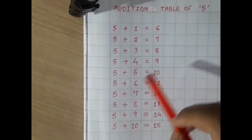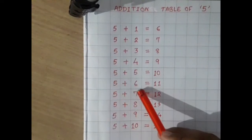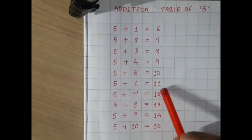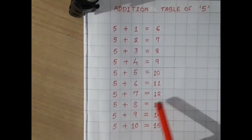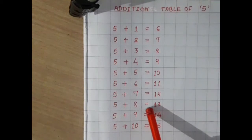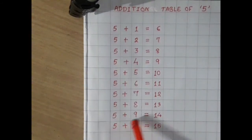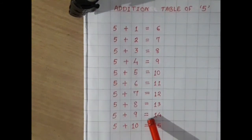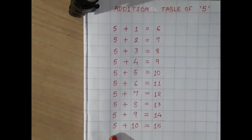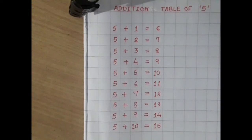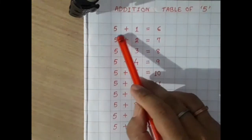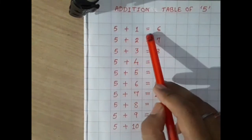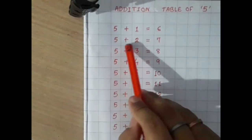Five plus six equals eleven, five plus seven equals twelve, five plus eight equals thirteen, five plus nine equals fourteen, and five plus ten equals fifteen. Now let's repeat it again.